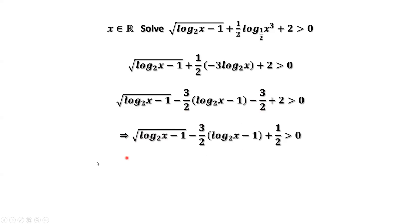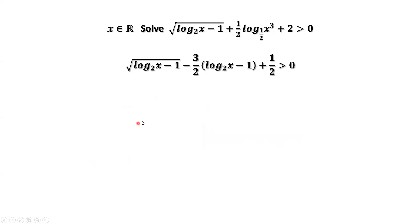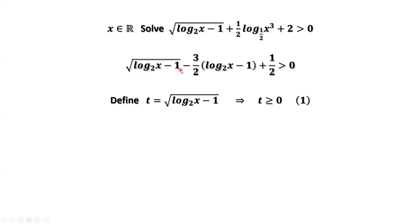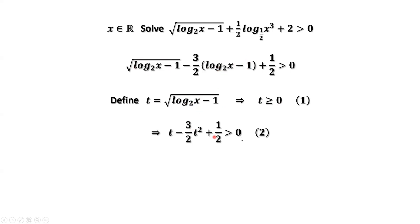We have this inequality. We define a new variable t equals the square root of log of x to the base 2 minus 1. Because we want to find the solution for x in the real number field, t must be bigger than or equal to 0, since we have a square root. We replace this part by t and this part by t squared, and then we have this result.